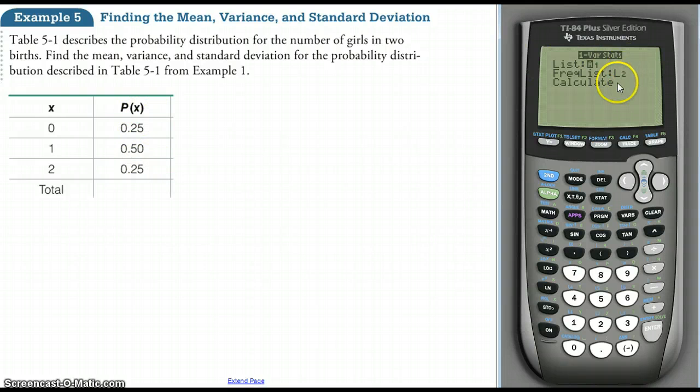So let me click calculate and there it is. So the mean is one, the sigma—the standard deviation—is point seven zero seven one zero six and so on.